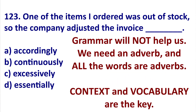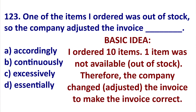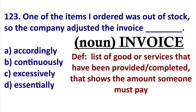Unfortunately, grammar cannot help you get this answer — it is all about context of the statement and vocabulary knowledge. Let's get the context: it is simple to understand. The idea is: I ordered 10 items, one was out of stock — so one was unavailable, the store didn't have it. Therefore the store adjusted or changed my invoice.